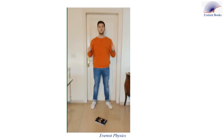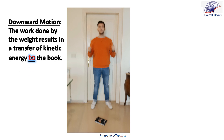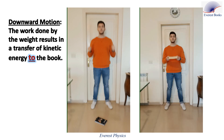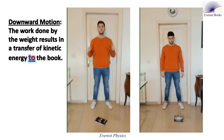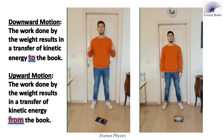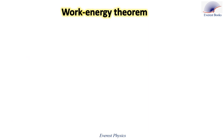The book falls under the action of its weight. While it is falling, its speed increases, so the book gains kinetic energy. In the downward motion, the work done by the weight results in a transfer of kinetic energy to the book. In the upward motion, the speed of the book decreases and it loses kinetic energy, so the work done by the weight results in a transfer of kinetic energy from the book.